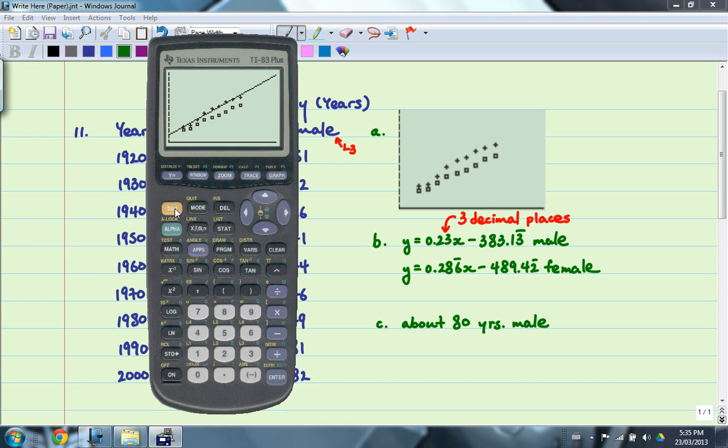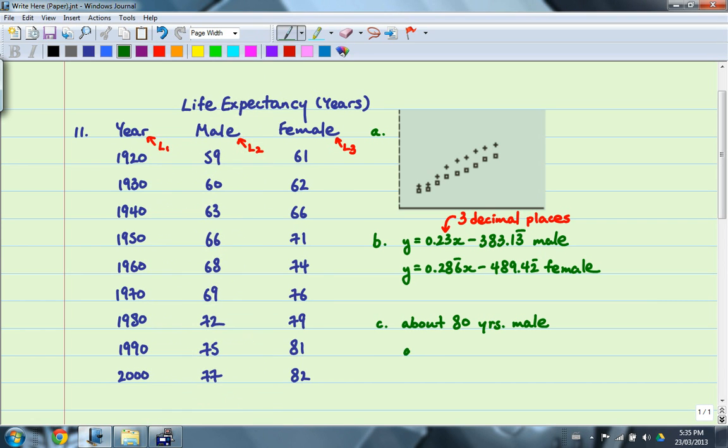Second, calculate, and once again, the value will be 2012, or the value at 2012, and it'll be approximately 87 years.